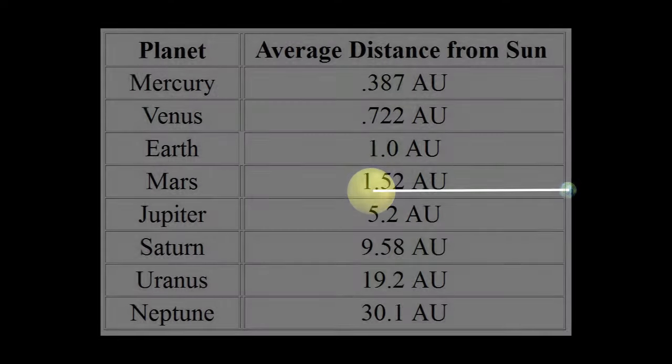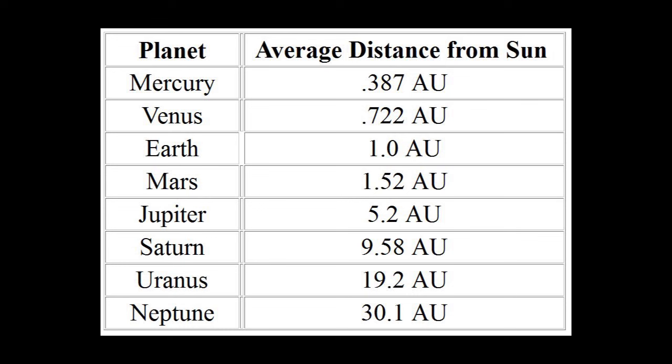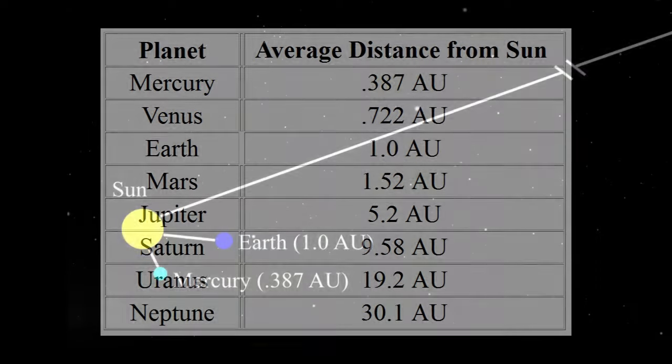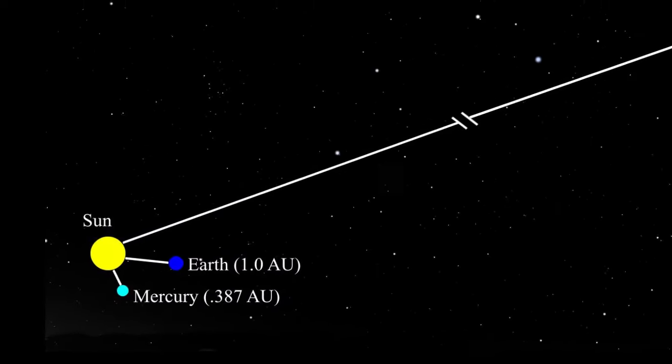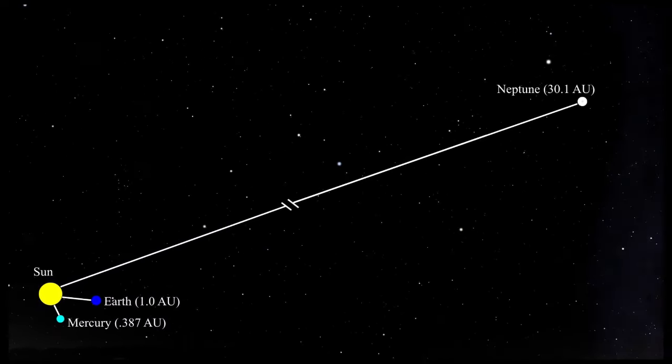This table shows the average distance from the Sun of each planet as measured in astronomical units. Mercury is the closest at 0.387, Earth of course is 1, and Neptune is furthest out at 30.1 AUs. It orbits at over 30 times the Sun-Earth distance. The astronomical unit remains an important standard widely used by astronomers.